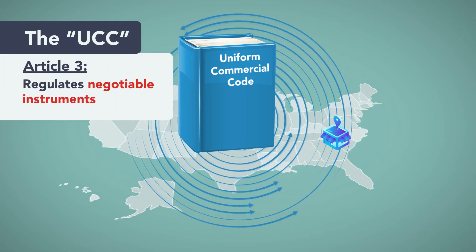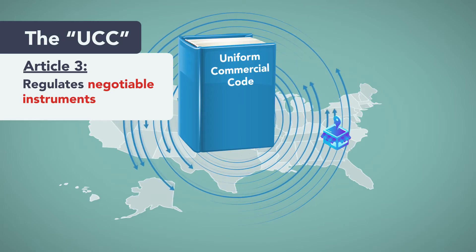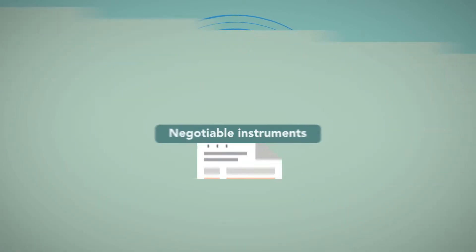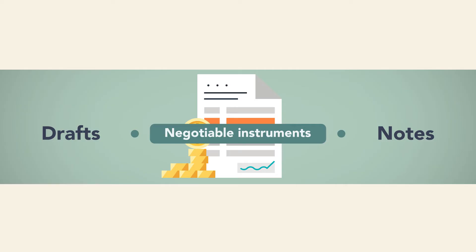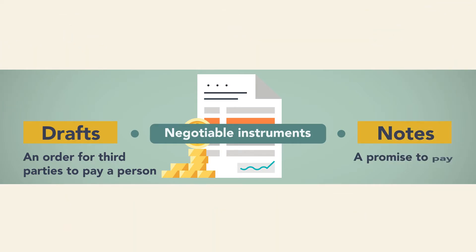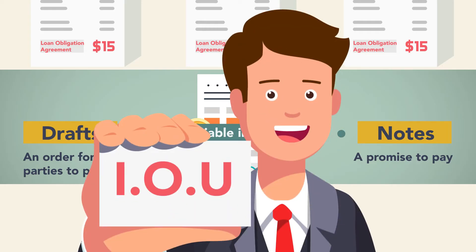Article 3 of the UCC regulates negotiable instruments, which are widely used types of commercial paper. Negotiable instruments include drafts and notes. A draft is an order for third parties to pay a person. The personal check is a commonly used draft. A note is a promise to pay. Loan obligation agreements and IOU notes are examples of notes.